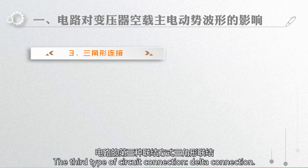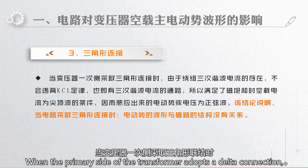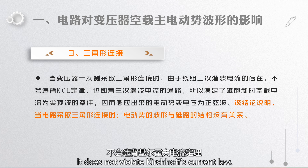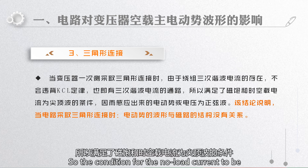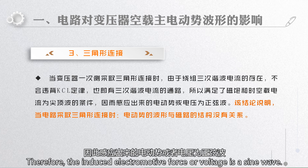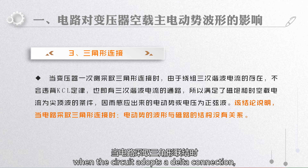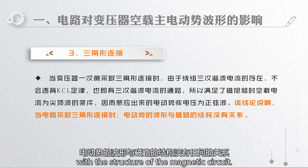The third type of circuit connection is delta connection. When the primary side of the transformer adopts a delta connection, due to the existence of the third harmonic current circulating in the winding, it does not violate Kirchhoff's current law. That is, there is a path for the third harmonic current. So, the condition for the no-load current to be a peaked wave under magnetic saturation is met. Therefore, the induced electromotive force or voltage is a sine wave. This conclusion indicates that when a circuit adopts a delta connection, the waveform of the electromotive force has nothing to do with the structure of the magnetic circuit.